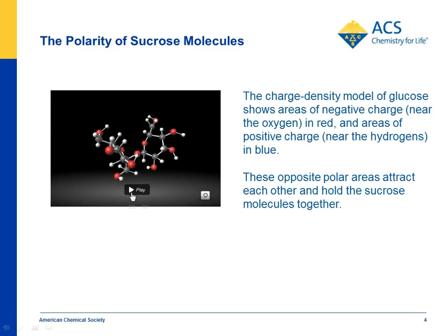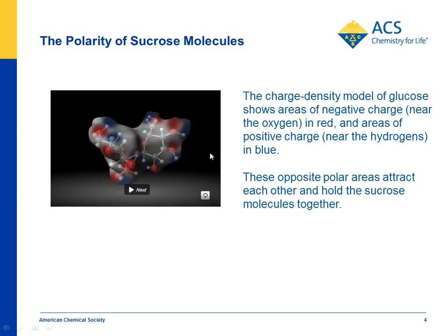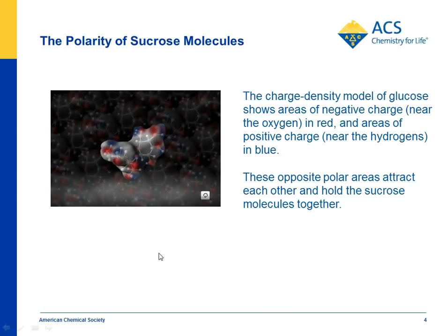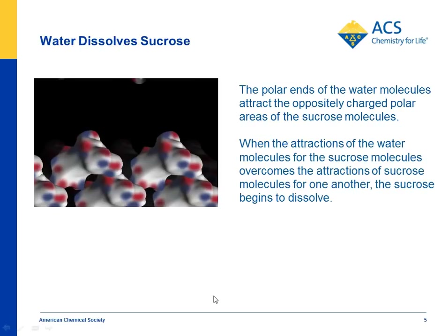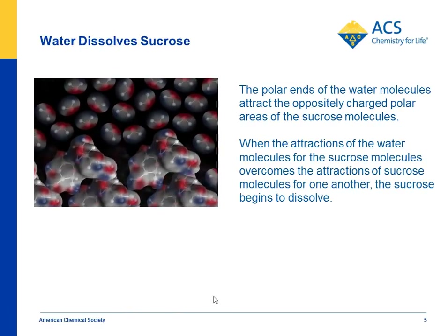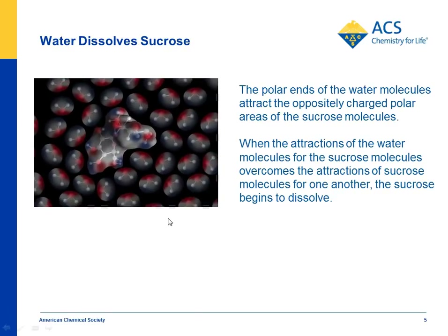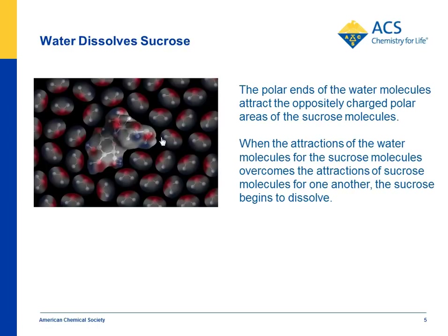Here's a sucrose molecule in the animation. You can see it has a lot of oxygen and hydrogens bonded together, creating many different polar areas. The area near the hydrogen is depicted as slightly positive — blue — and the area near the oxygen is slightly negative — red. All these sucrose molecules are connected to each other in a crystal just because of the interactions between the positive and negative areas. When water comes over, the positive part of water associates with the negative part of the sucrose and vice versa, until the interactions pull a sucrose molecule away from the others, and that's how it goes into solution.